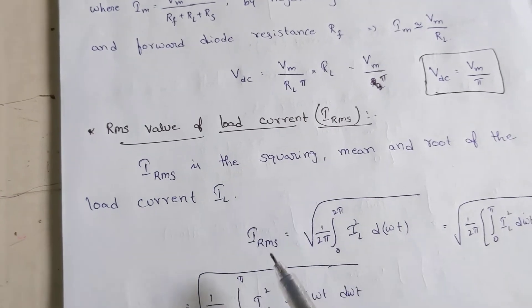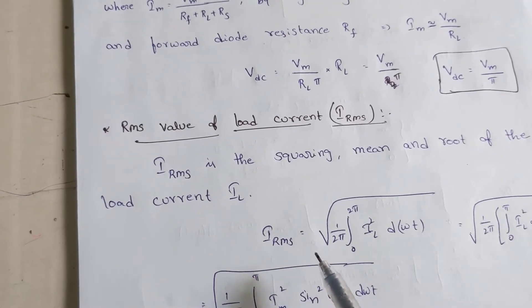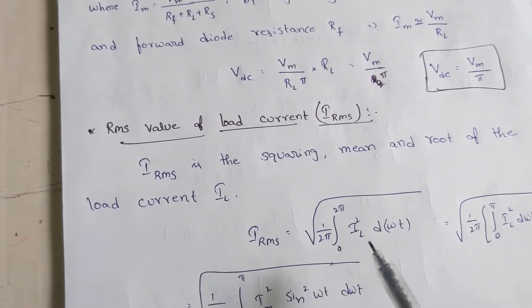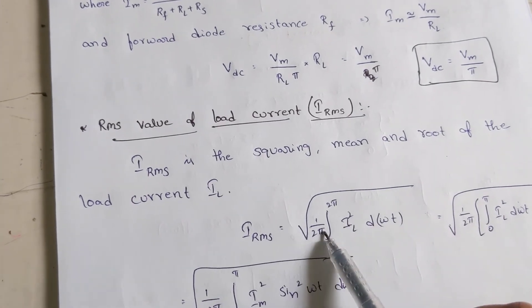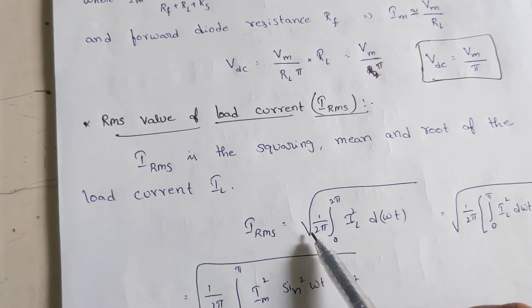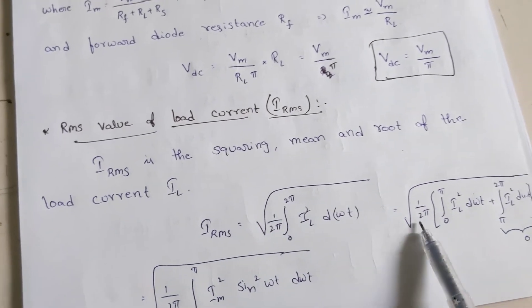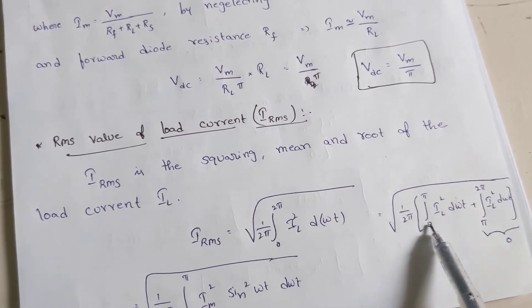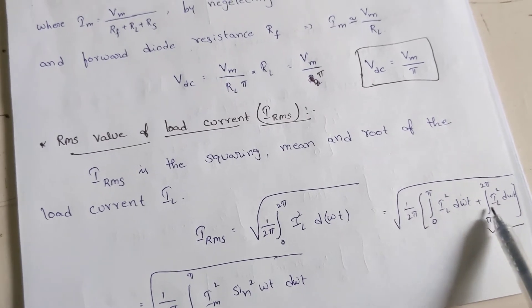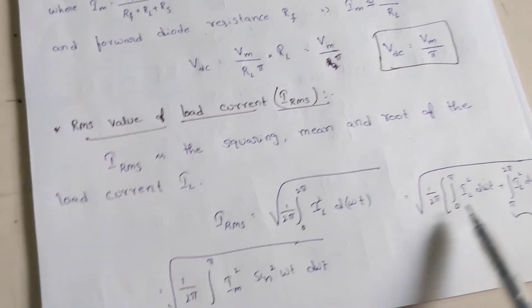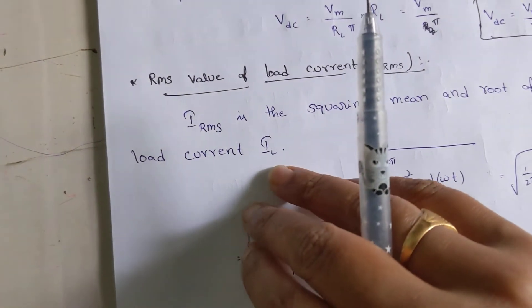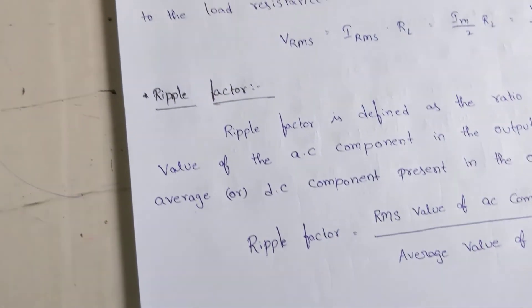Similarly, for the RMS value — RMS means root mean square, so you first square the expression, then take the mean, then take the overall root. For the load current, IL = IM sin(ωt), we square it and take the average divided by total area. Between 0 to π we have the value IM sin(ωt), and from π to 2π it is zero, so we only integrate between 0 and π.